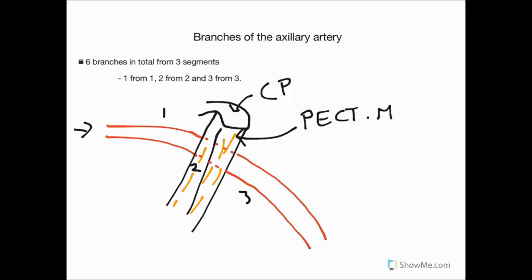The axillary artery has six branches in total from its three segments. The rule to help you remember is: one branch from the first segment, two branches from the second segment, and three branches from the third segment — one from one, two from two, three from three. Not all six branches supply the breast, but we'll point those out as we come across them.